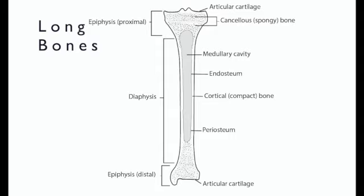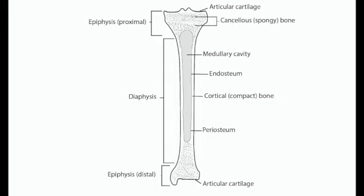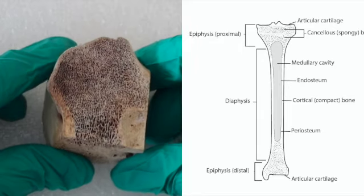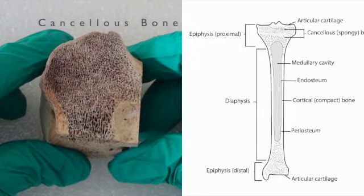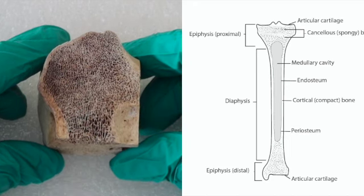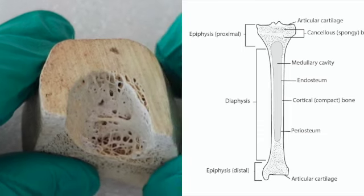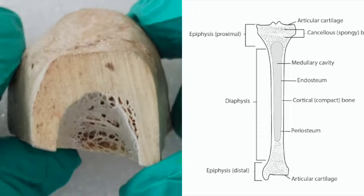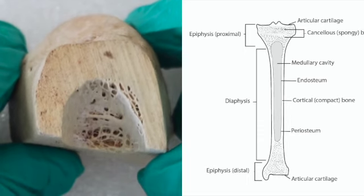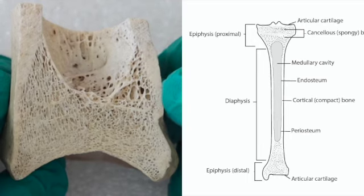In describing animal remains, it's important to know the names and orientation of each part. For long bones, the proximal end is the end closest to the center of the body, while the distal end is the part away from the body, for example towards the toes or the fingers. The central or shaft part of the long bone is called the diaphysis, and the two ends that articulate with other bones are called epiphyses. The spongy-looking bone in the epiphyses is called cancellous bone — it acts somewhat like a shock absorber. A cross section of the diaphysis just above the epiphyses shows the much denser cortical bone, as well as a portion of the medullary cavity, which is where we find bone marrow in mammalian bone.